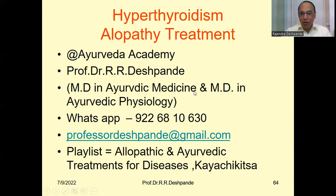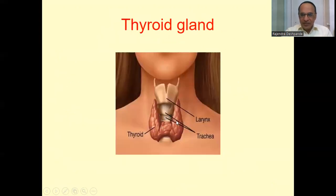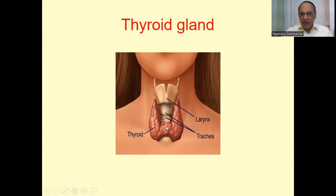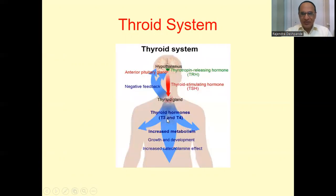This video is available in my playlist of allopathic and Ayurvedic treatments for diseases, and also under the Kaya Chikitsa playlist. Here you can see the thyroid gland. Here is the voice box — the larynx — by which we speak, and here you can see the trachea. On the two sides of the larynx and trachea are the lobes of the thyroid gland — the right lobe and left lobe — connected by a joint called the isthmus.